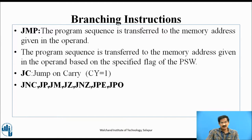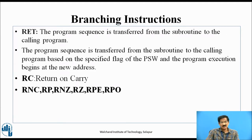Conditional jump instructions include: JZ (jump if zero), JNZ (jump if not zero), JPE (jump if even parity), JP, JNC (jump if not carry). RET: The program sequence is transferred from the subroutine to the calling program. Conditional return instructions include: RC (return if carry), RNC (return if not carry), RNZ (return if not zero), RZ (return if zero), RPE (return if even parity), RPO (return if odd parity).